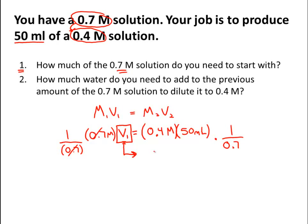And it turns out that I need about 28.6 milliliters of my original concentrated solution. That's awesome. That gives me part of the problem. So what did I just find out here? How much of the 0.7 molar solution do I need to start with? I needed to begin with 28.6 mLs. Awesome.